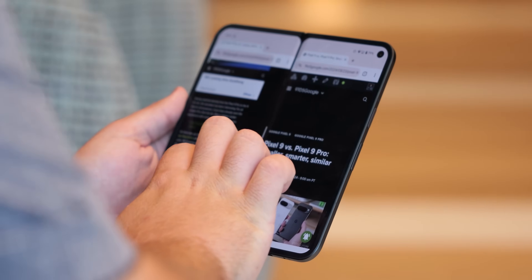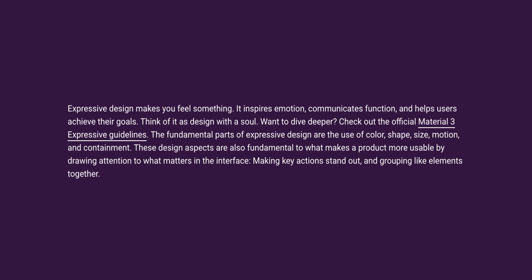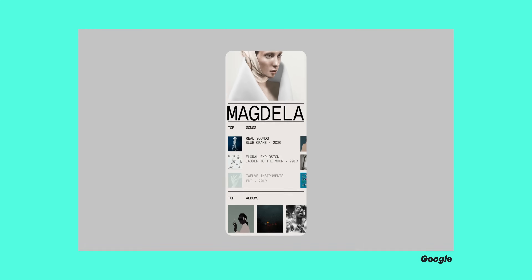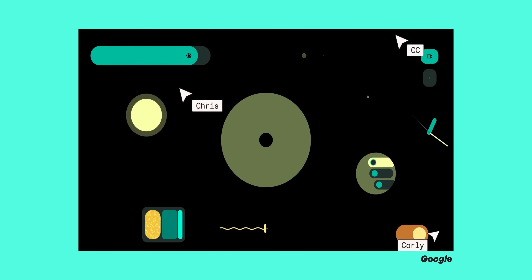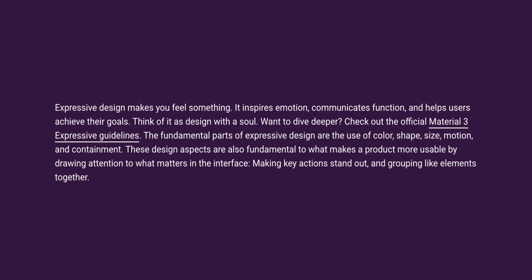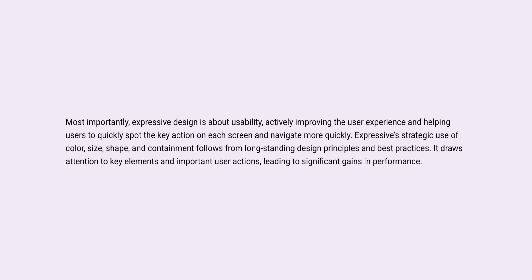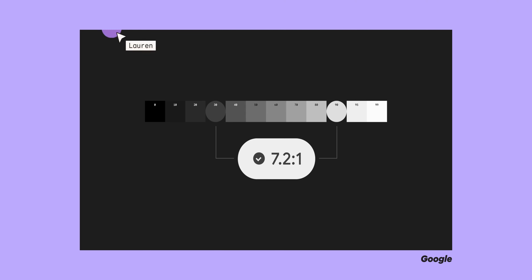Google says the fundamental parts of expressive design boil down to five key elements: color, shape, size, motion, and containment. They're aiming to create delightful user experiences with a bold use of shape and color, pushing dynamic color principles even further with bolder palettes and more distinctive visual elements. These design elements aren't just about aesthetics — they're fundamental to usability, drawing attention to what's important, making key actions stand out, and guiding the user's eye to make interactions more efficient.